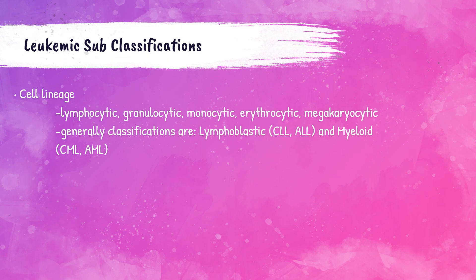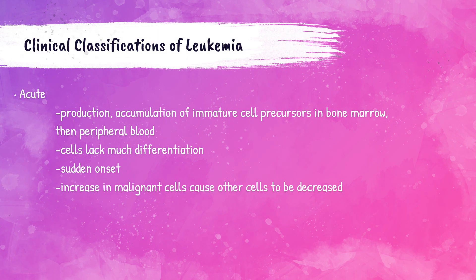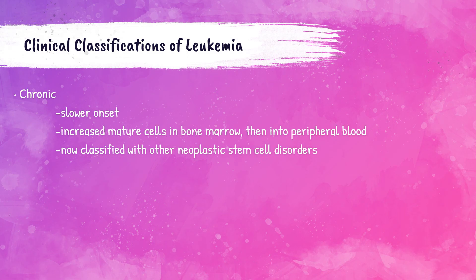In leukemia, affected cells can include lymphocytes, granulocytes, monocytes, erythrocytes, and megakaryocytes. There are two main classifications: lymphoblastic and myeloid, each further divided into acute or chronic. Acute leukemias have sudden onset of immature cell precursors within the bone marrow and peripheral blood, with increased malignant cells reducing normal cells. Chronic leukemias have a slower onset with increased mature cells within the bone marrow and peripheral blood.